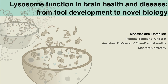Munther did his undergraduate degree at Jordan University of Science and Technology, where he graduated at the top of his class. He then did his master's degree and PhD at Hebrew University in Jerusalem, where he studied the role of OCT3 and OCT4, transcription factors important for regulating Wnt signaling and stem cell fate determination.